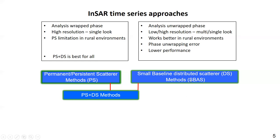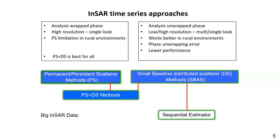Another technique, called SBAS or Small Baseline Subset, is a technique for processing distributed points. Compared with PS and combined techniques, SBAS is less accurate because it cannot control phase unwrapping accurately. For example, whenever one phase cycle is wrong, it can result in an error of about 25 mm in C-band. So the algorithms are ready, but we need a better processing strategy for large datasets. For distributed targets, CAMSA is a feasible processing chain based on an estimator to account for both persistent and distributed targets.